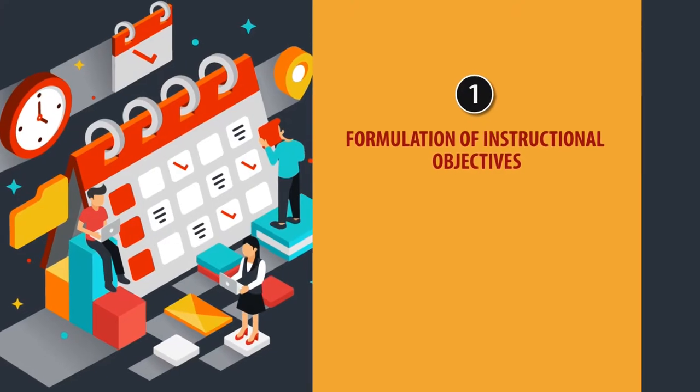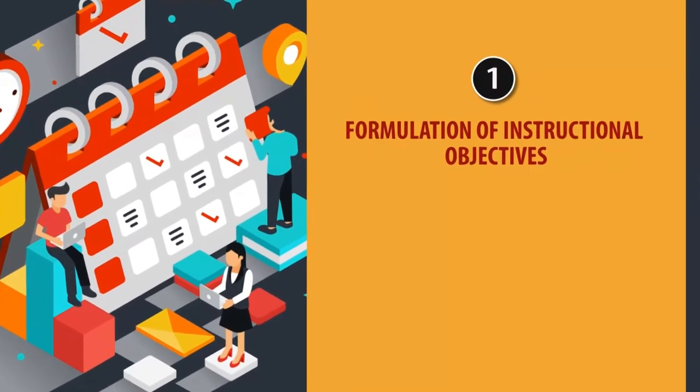When writing teaching objectives they have to be very specific. When I say 'define,' it makes it specific. When I say 'list,' it makes it specific. When I say 'explain,' it makes it specific. So the behavior of the learner after the completion of the topic is specified by the teacher in this first operation of the pre-active phase: formulation of instructional objectives.